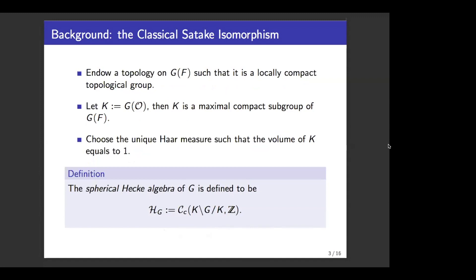We can install a topology on G(F) to make it into a locally compact topological group. Under this topology, the subgroup G(O), which we denote by K, becomes a maximal compact subgroup of G(F). And we can choose the unique Haar measure which makes the volume of K equal to one. Under these conditions, we can define the spherical Hecke algebra of G as the set of Z-valued compactly supported functions on the double quotient space K\G(F)/K.